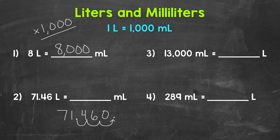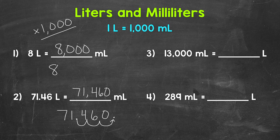Fill this gap with a zero, and our answer is 71,460. So 71.46 liters equals 71,460 milliliters. Let's verify that works for number one as well. Rewrite 8 — the decimal goes after a whole number — move it once, twice, and three times to the right, fill the gaps with zeros, and we get 8,000 that way as well.